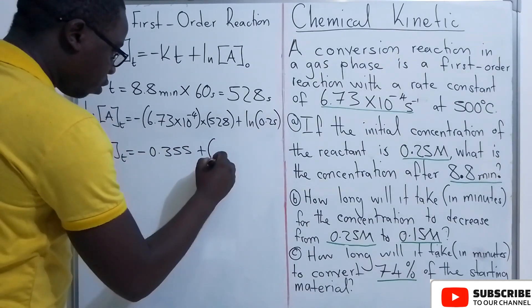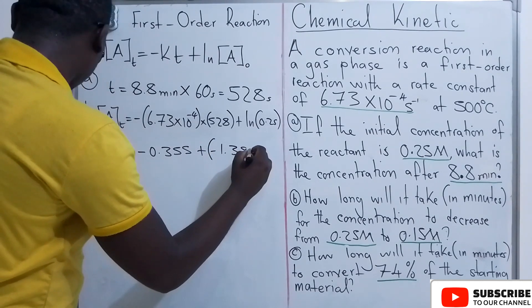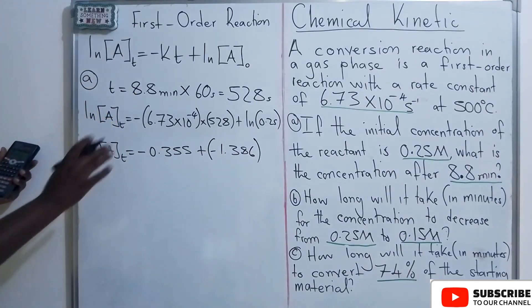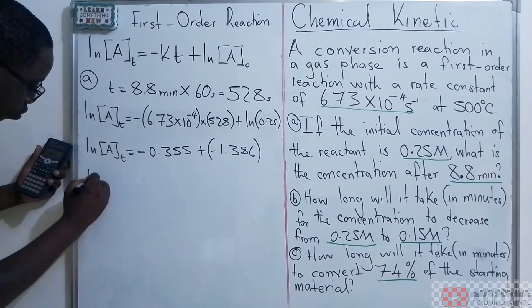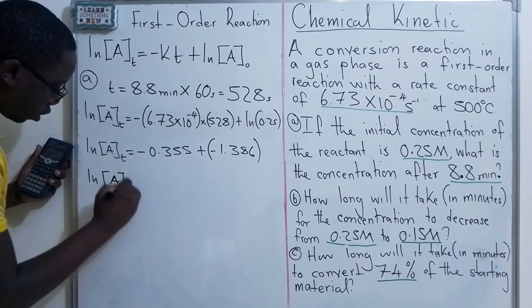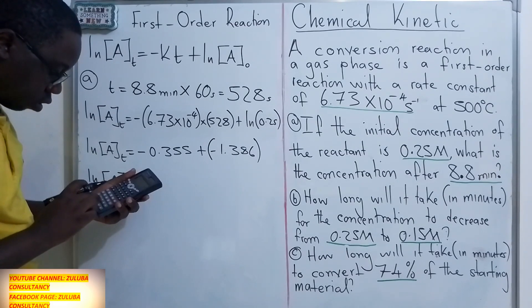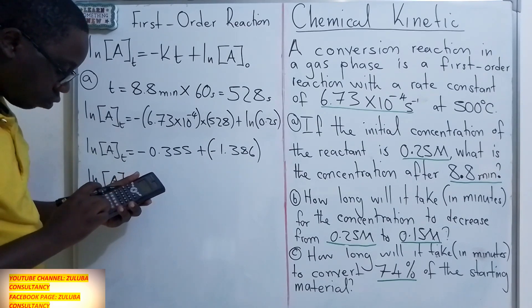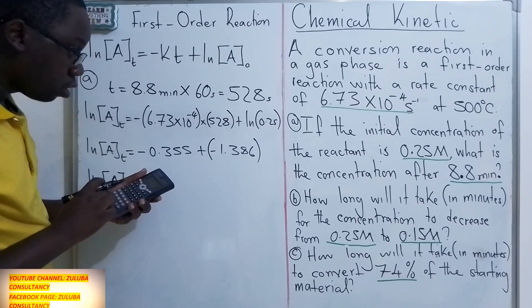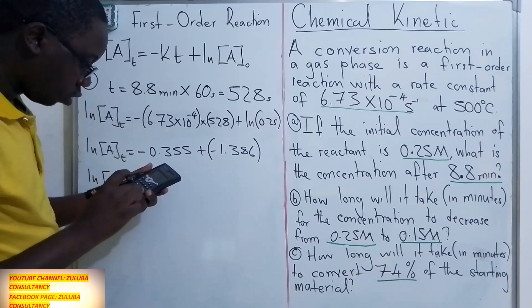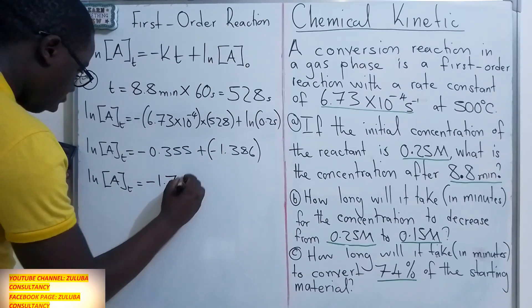So this is the natural log of 0.25. So we have -0.355 plus -1.836, giving us the negative value of -1.741.